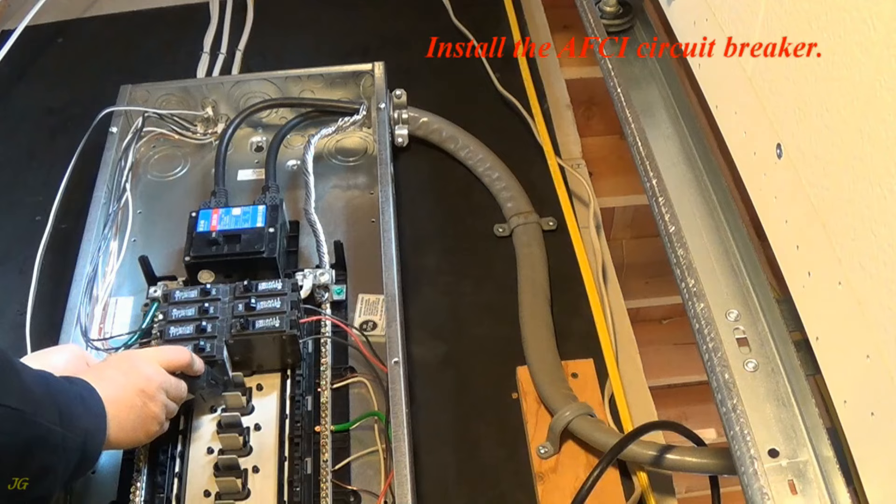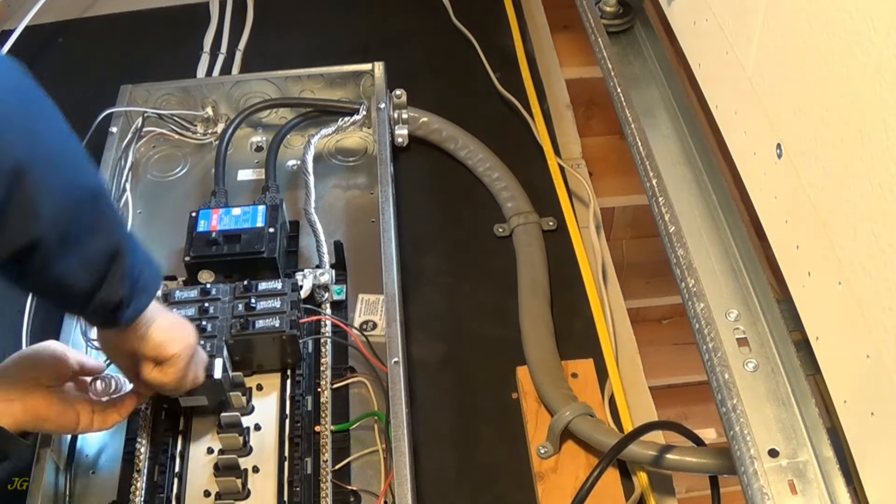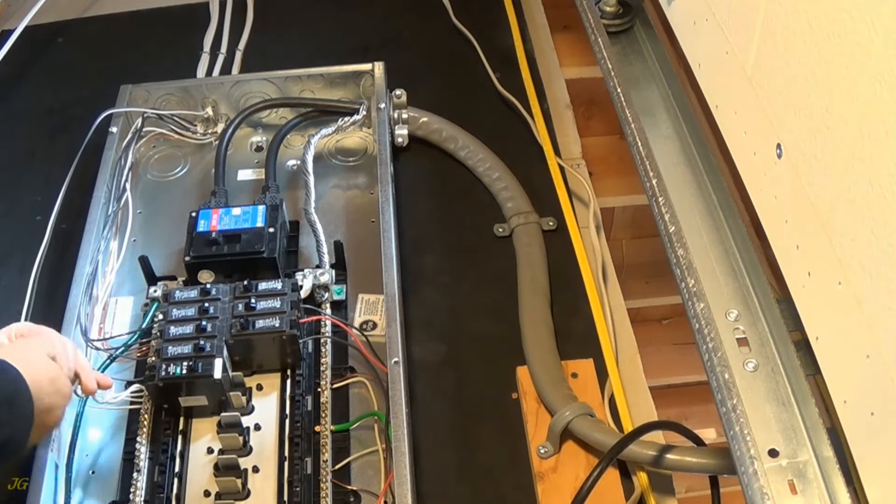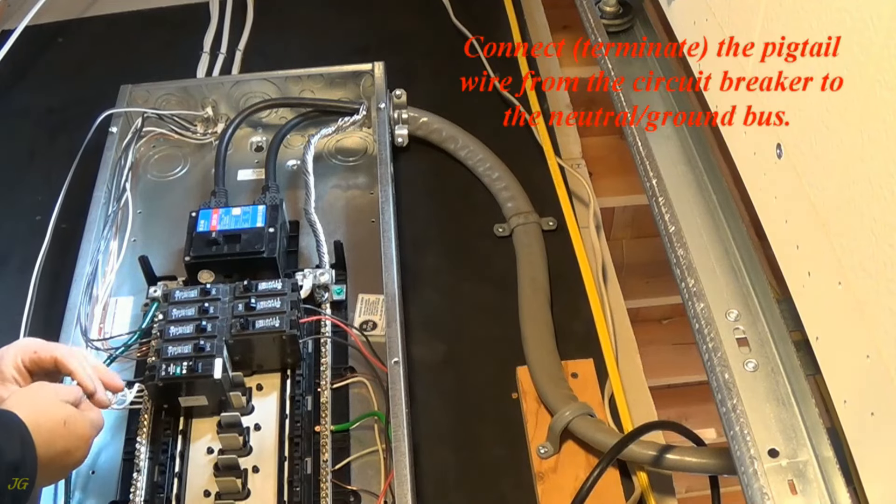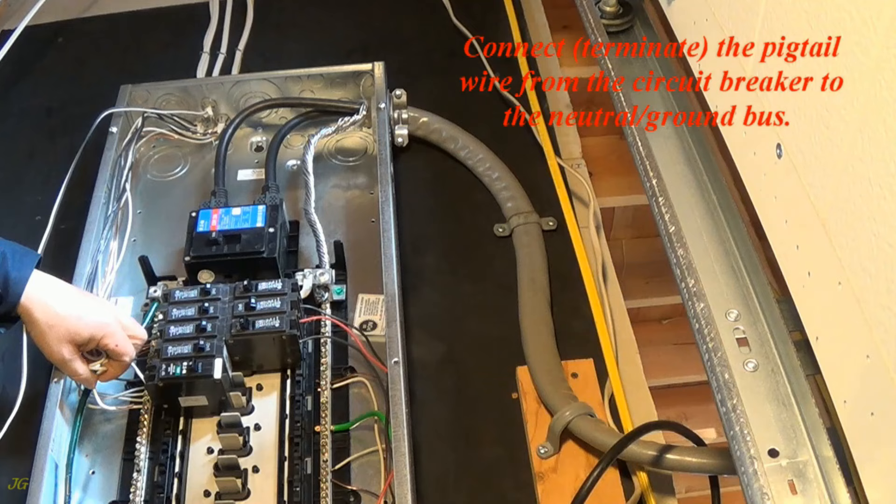Install the AFCI circuit breaker. Connect, terminate, the pigtail wire from the circuit breaker to the neutral ground bus.